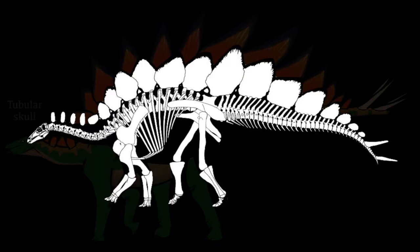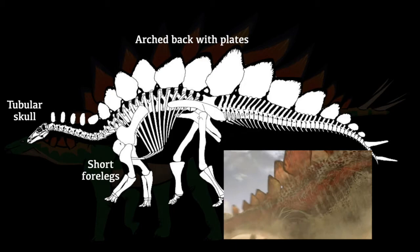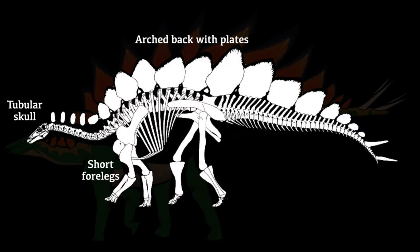The Stegosaurs had small tubular skulls, short legs which led to an arched back, and the little scutes had developed into large plates. Debate is still ongoing about what they were actually for. Examples of this group are Stegosaurus, Kentrosaurus, and Tuojiangosaurus.